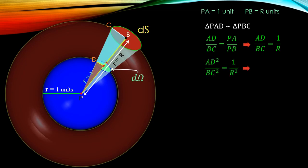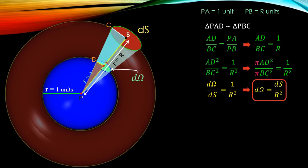Now squaring both sides and multiply PI with AD square and BC square we get the following expression. We can write PI AD square as an area or solid angle d omega and PI BC square as area dS. Finally on rearranging we get d omega is equal to dS by R square.